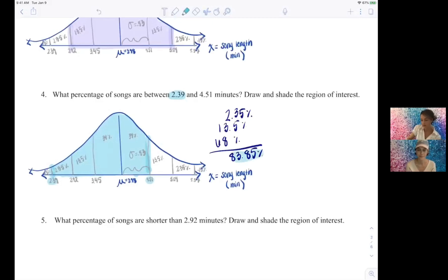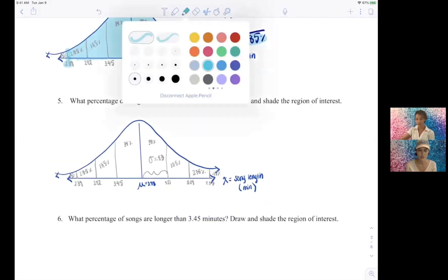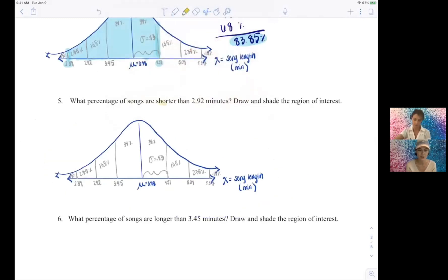Okay, let's try another one. So what percentage of songs are shorter than 2.92? So shorter would be like less, right, which means to the left, correct.